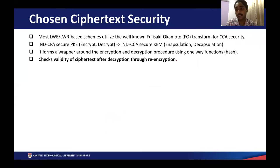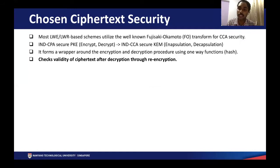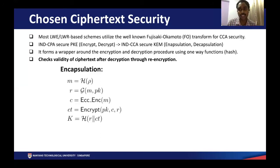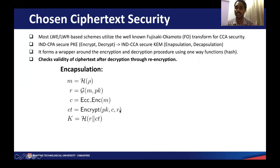Regarding chosen ciphertext security, the FO Transform has been the technique widely used in several lattice-based schemes to convert a chosen plaintext secure public key encryption scheme into a chosen ciphertext secure key encapsulation mechanism. It forms a wrapper around the encryption and decryption procedures using several instantiations of one-way functions. It works by checking the validity of the ciphertext through re-encryption after decryption. In the encapsulation procedure, a message is generated from a random seed, and we hash the message with the public key to generate a random r. If required, we encode the message to a codeword and perform an encryption procedure. The random r is used to deterministically generate the ephemeral secrets S', E', and E'' in the encryption procedure. The shared key K is obtained by hashing r with the ciphertext.